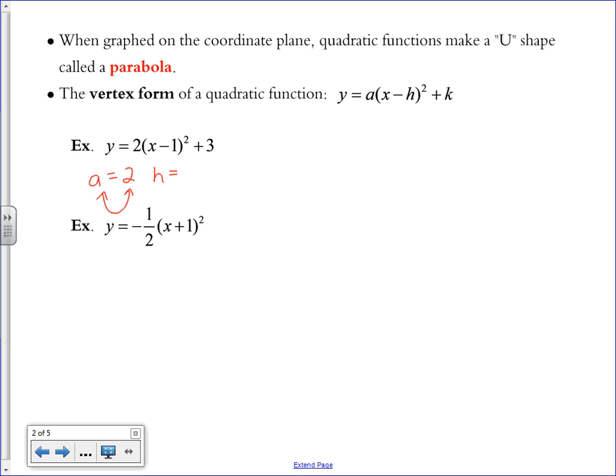We have h, which is the number inside the parentheses with x, and it's always the opposite of what you see. So if it says x minus 1, your h value is positive. That's because there's already a minus sign in the formula. Then our k value is exactly what you see added outside the parentheses, which is positive 3.